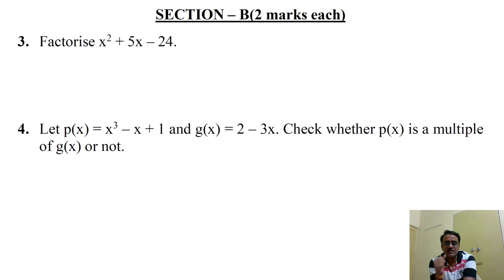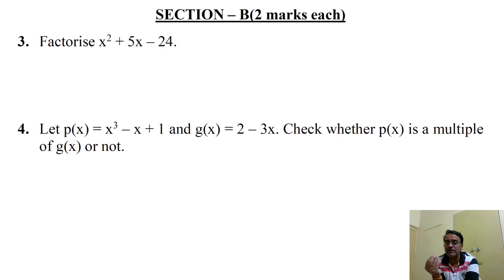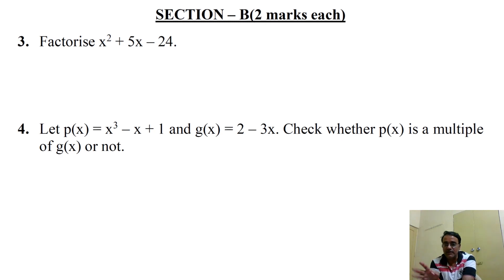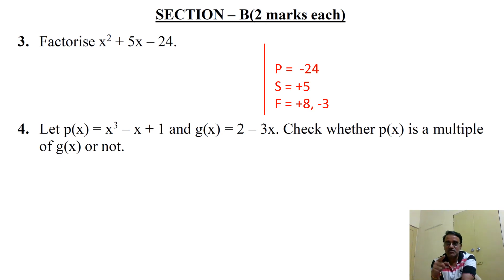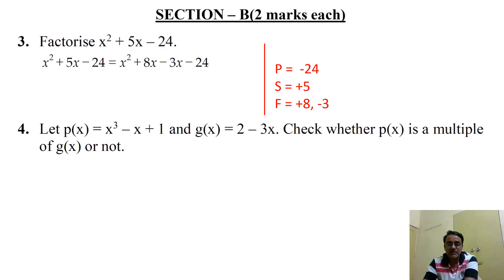Section B, first question: factorize x² + 5x - 24. Here the product is -24 and sum is +5. Whenever the product is negative, we find two factors whose difference equals 5. For 24 the factors are 8 and 3. The sign of the sum goes on the larger number, so +8 and -3. We split 5x as 8x - 3x.